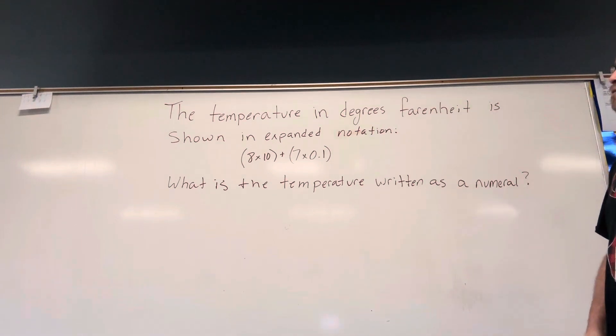The temperature in degrees Fahrenheit is shown in expanded notation. 8 times 10 plus 7 times 1 tenth. What is the temperature written as a numeral?